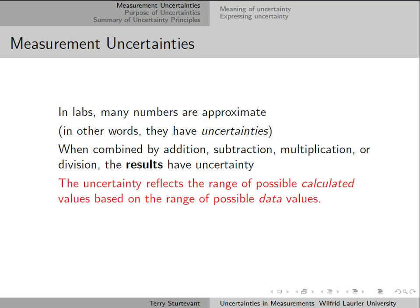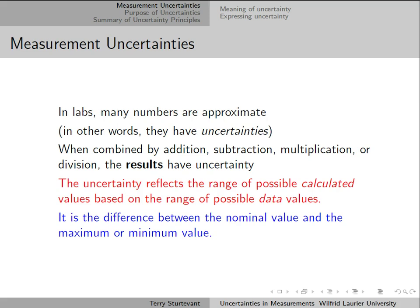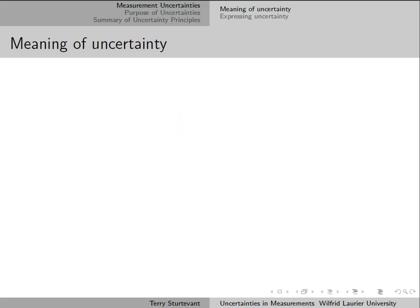The uncertainty reflects the range of possible calculated values based on the range of possible data values. And it's the difference between the nominal value and the maximum or minimum value.